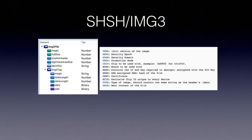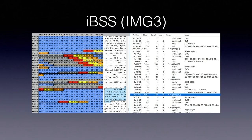Looking at SHSH and the IMG3 file format: the grammar for an IMG3 file has some magic, some sizes, and a bunch of IMG3 tags. Those tags can contain things like the iBoot version, which chip the firmware is for, and you can also see SHSH. The SHSH is basically an RSA-encrypted SHA-1 hash of the file. In a hex editor you can see the IMG3 tags, with the SHSH tag highlighted. Below the SHSH is a certificate containing Apple's public key to verify the signature.